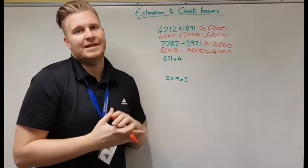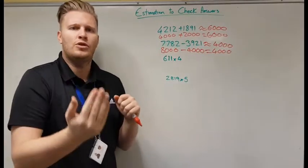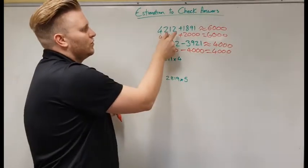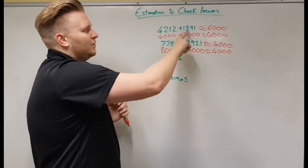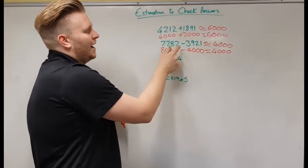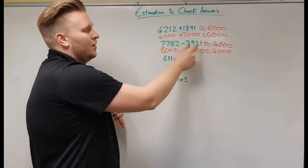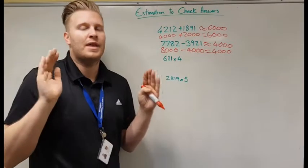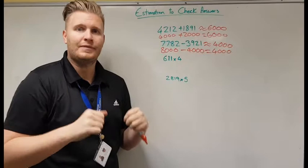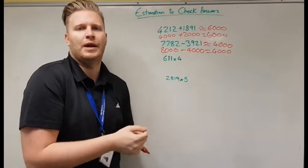Now what you also have to see with these is the more that you round the number by, what I mean is I'm rounding 212 there. That's how many I'm taking off to get to 4,000. And this one I'm adding just over 200 on. That one I'm adding about just under 100 on. The bigger the number that you're moving, the further out your answer will be.